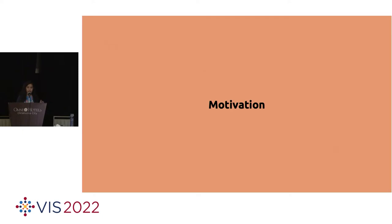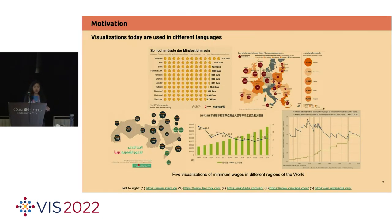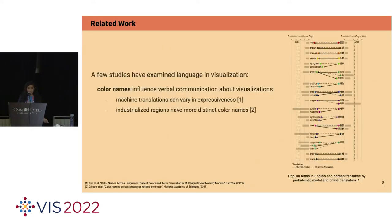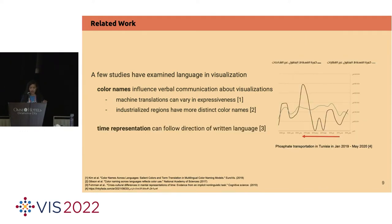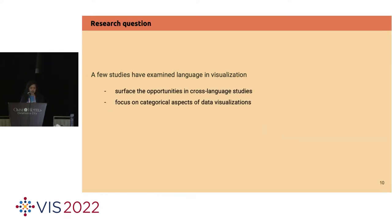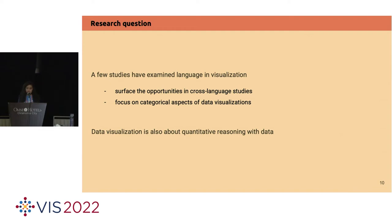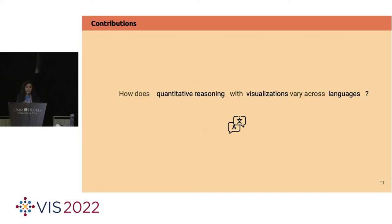Data visualizations today are used in different places and in different languages. A few studies have investigated this intersection between language and visualizations — for instance, color names. It's shown that color names across languages influence communication about data and visualization. Other research showed that preferences for time representation can follow the direction of the written language. These studies surface interesting opportunities and challenges for cross-language studies, and they focus on categorical aspects of data visualization.